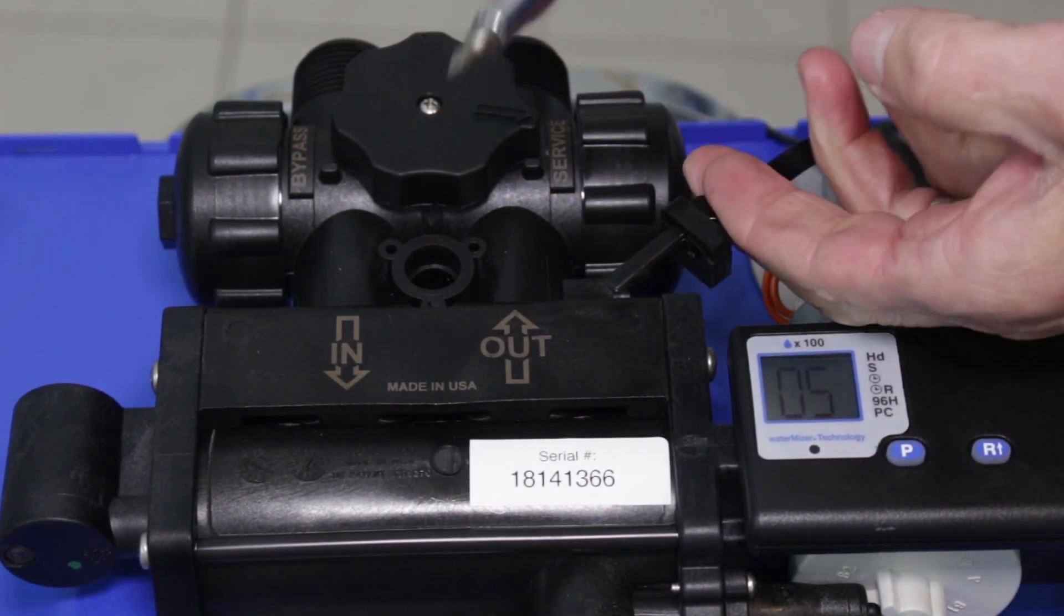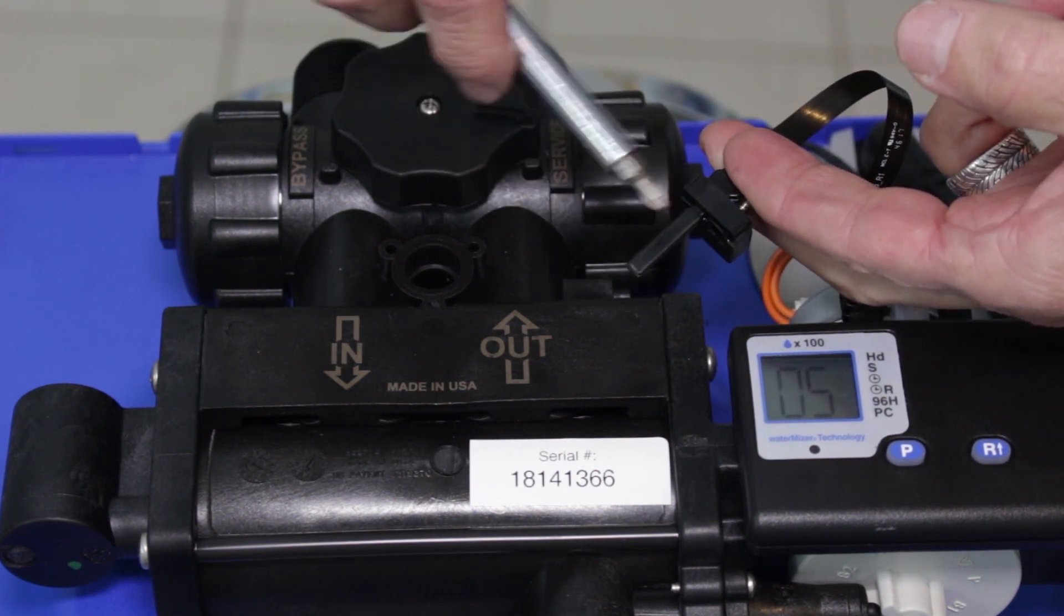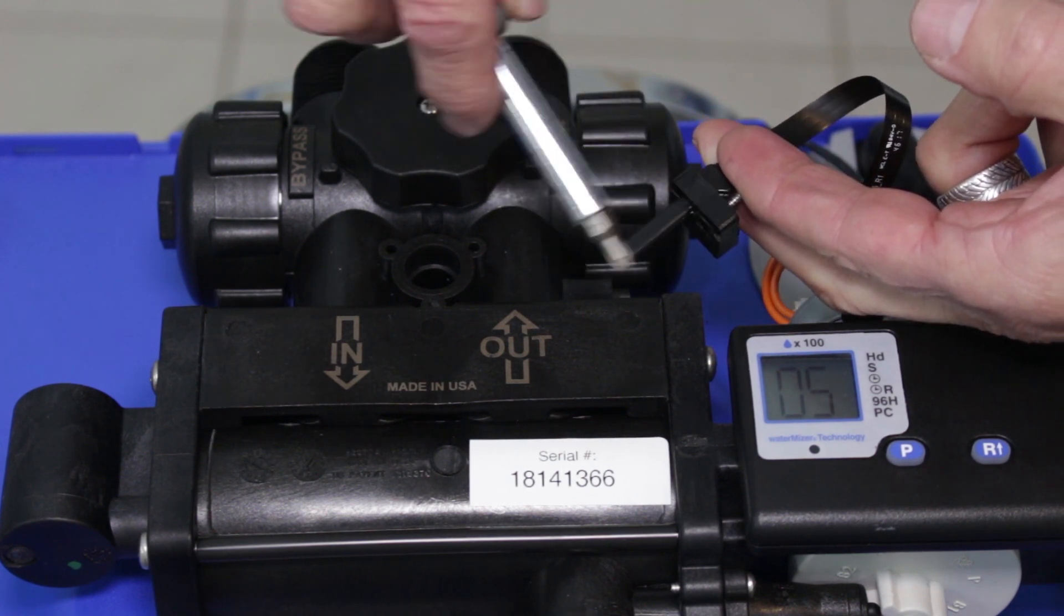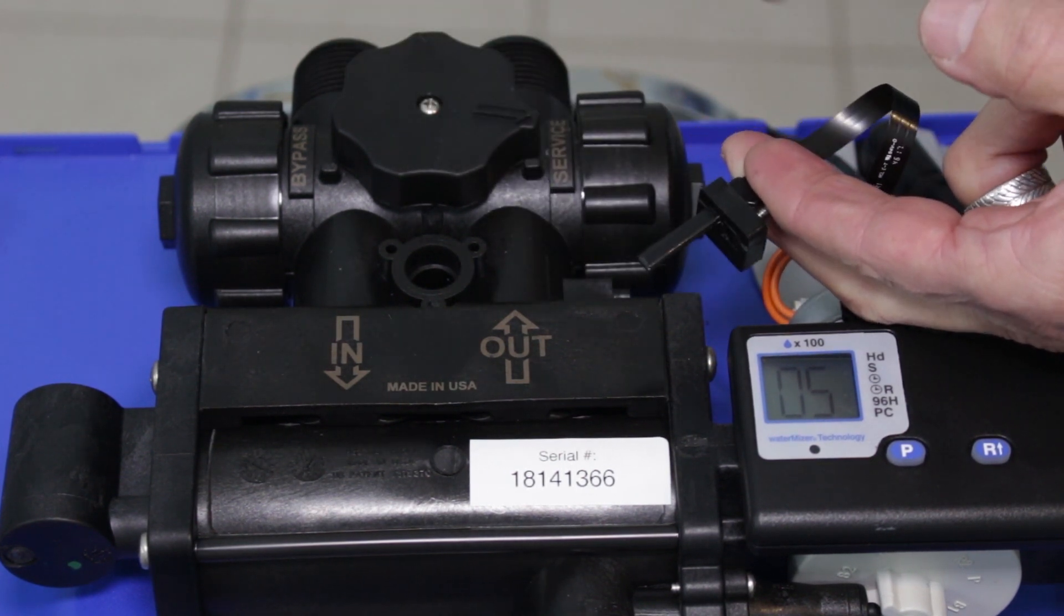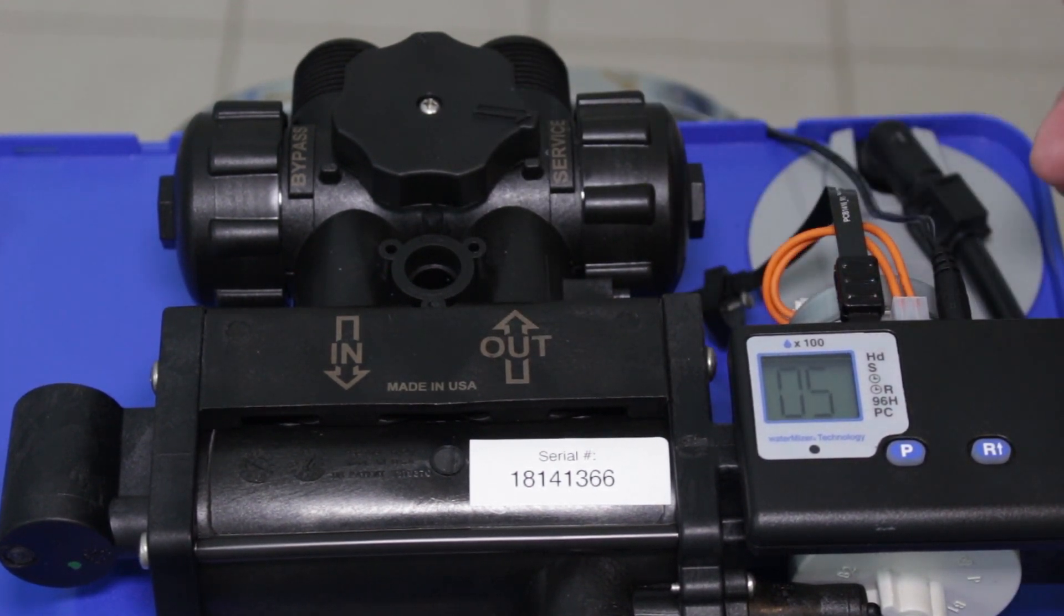You can test it by running a magnet. This is a magnetic screwdriver. When you run the magnet over here, this light should be flashing. If it is flashing, then there's a problem with the turbine inside here. I'll show you what that looks like.